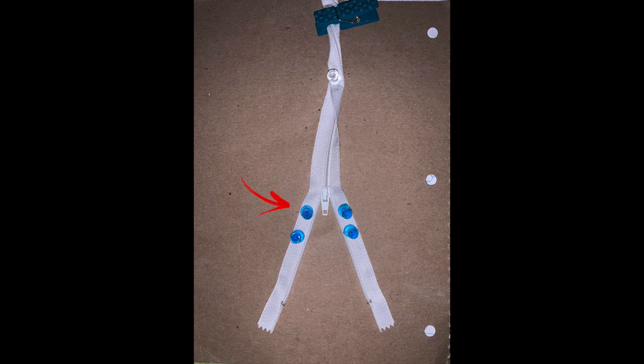At the same time, single-stranded binding proteins, represented by the blue thumbtacks, bind to strands of DNA to keep them separate. This is important to prevent the reformation of the double helix without replicating.